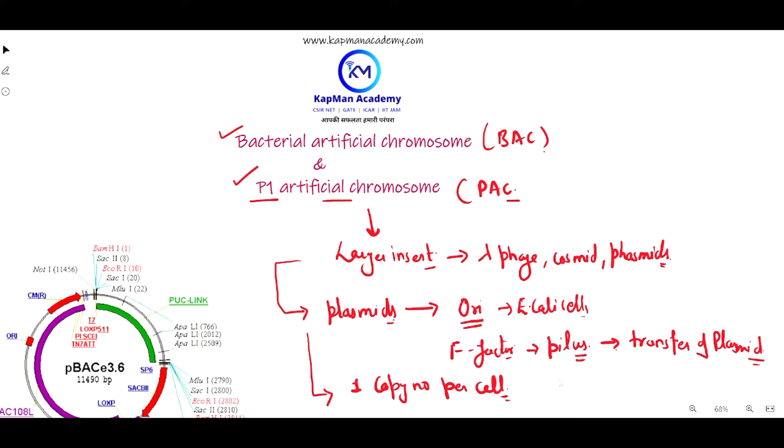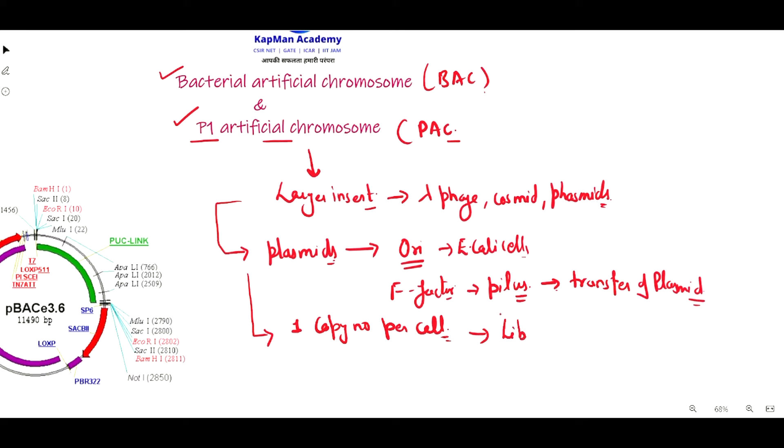This is basically used for the construction of genomic libraries because of its larger insert capacity. It can also be used for double-stranded DNA virus modifications, which are too large to clone into cosmids, phasmids, or plasmids. The main feature of bacterial artificial chromosome is its large insert capacity, which makes it useful for genomic DNA library preparation and virus modifications compared to other cloning vectors.